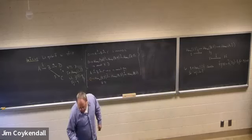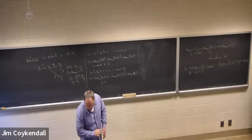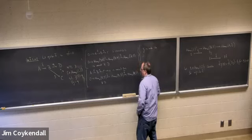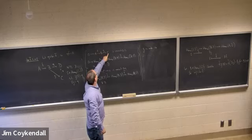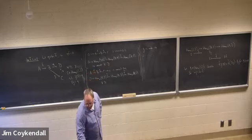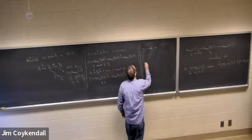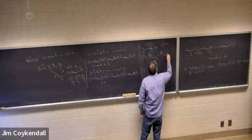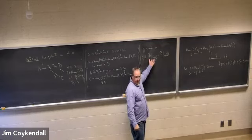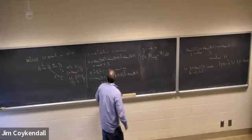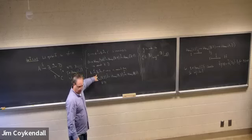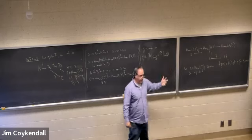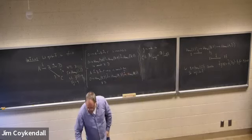Now what we know about the original sequence is g is onto. So if g is onto, that means C is isomorphic to B mod the kernel of g. This is just the first isomorphism theorem. Right here is the observation that in this sequence, the image of f equals the kernel of g. So I can think of B mod kernel g as exactly equal to B mod the image of f, because kernel g and the image of f are the same thing.